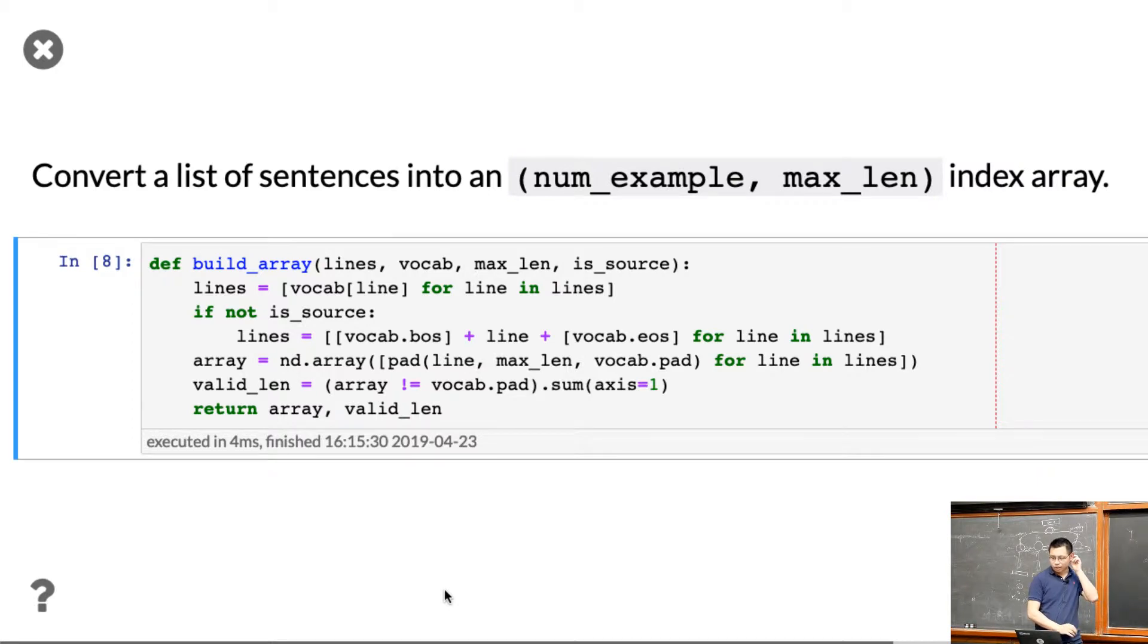Now we can build the arrays given a bunch of lines, given a vocabulary, and given maximum length. The only difference here is if it's a source language, we can pad as before. But if it's a target language, we need to add the beginning of sentence and end of sentence tokens into each line. So that's the difference, because for decoding, you want to know when to start and when to stop. Because the prediction has different lengths, we want to have the specialized tokens here.